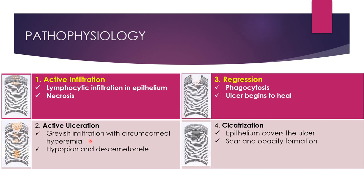Stage two is the stage of active ulceration. It results from further necrosis and sloughing of the epithelium, Bowman's membrane, and the stroma. The walls of the ulcer may become thick due to imbibition of fluid and masses of leukocytes. There is circumcorneal hyperemia and vascular congestion of the iris and ciliary body, resulting in associated iritis or iridocyclitis — also called anterior uveitis. Iris vessels become hyperpermeable and exudation occurs in the anterior chamber, which may lead to hypopion formation.